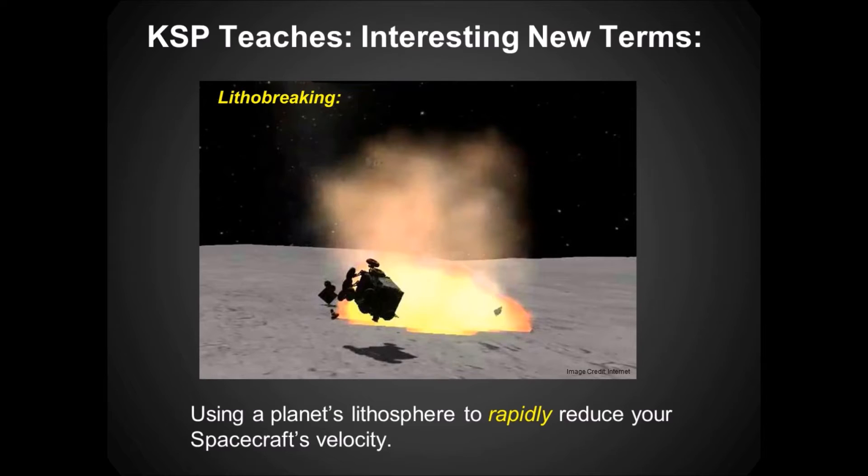Lithobraking is kind of a comedic term for crashing — it's using a planetary lithosphere to slow down your spacecraft rapidly. We did have lithobraking used by one of the space probes that ended up landing in the Utah desert, but the parachute didn't deploy, so it landed way faster. Was that a sample return? It was a sample return — Stardust. So the samples were damaged and they dealt with it. The analysis took years longer, but they did it. Pretty cool.